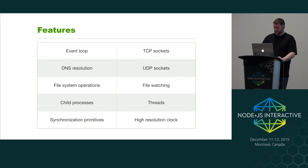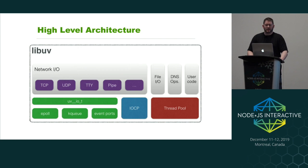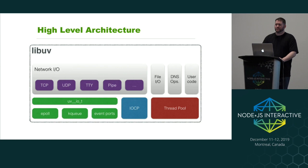I want to talk about the high-level architecture of LibUV. I like to think of it as broken into two rows. The top row — network IO across to file IO, DNS, and user code — is more of the public-facing API that users of LibUV consume. The bottom row — IOCP, the thread pool, and things like that — is more of the guts of LibUV. You can get pretty far using LibUV without having to interact with any of that stuff.